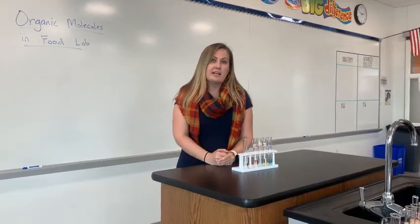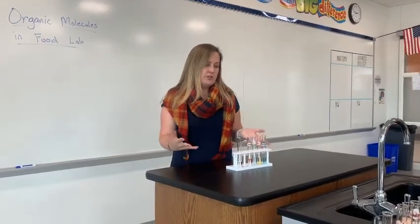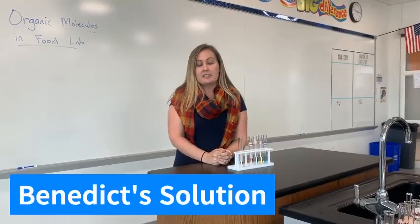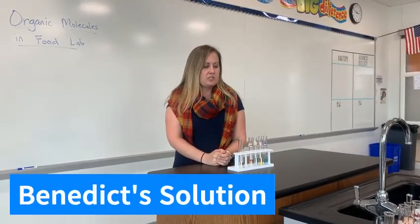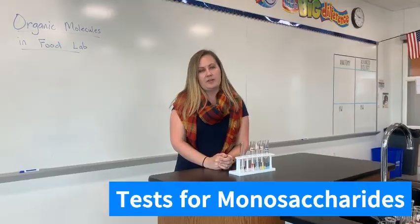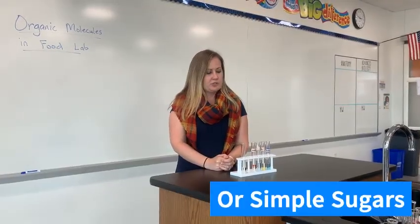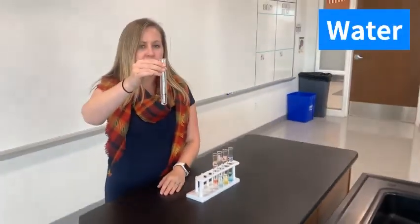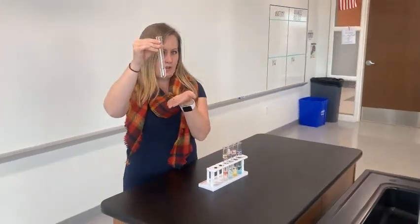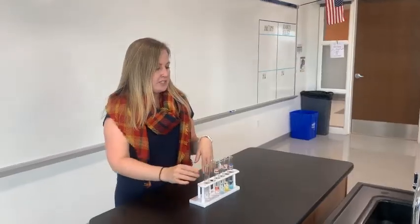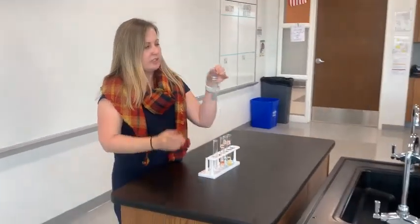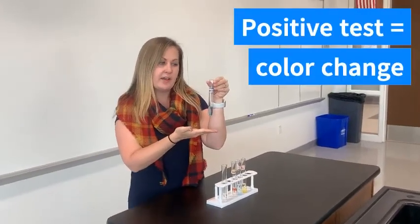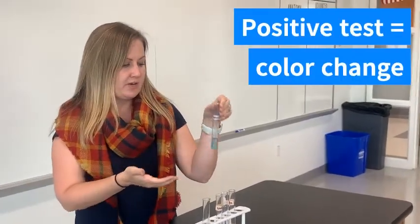In this lab, there are four different tests that we did on different food samples. The first test is called a Benedict solution. What Benedict solution does is it tests for the presence of monosaccharides, which are simple sugars. Right now I have water as our control group. When I add Benedict solution to it, it starts off as blue, and any color change from this indicates the presence of a monosaccharide.